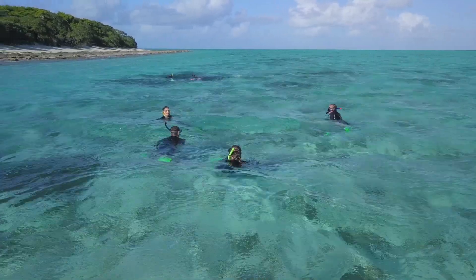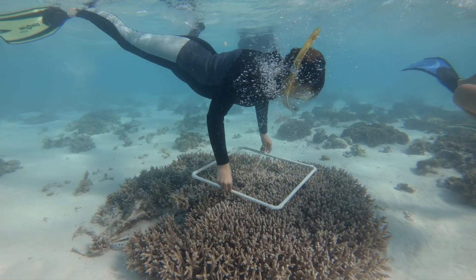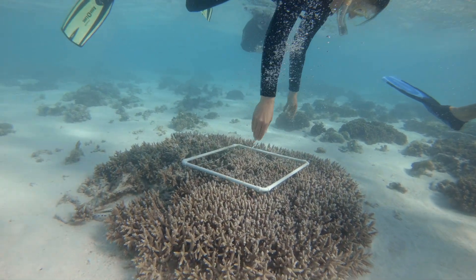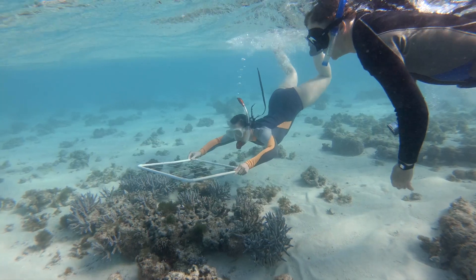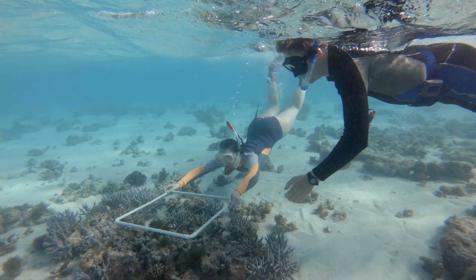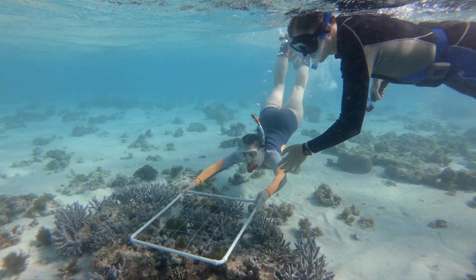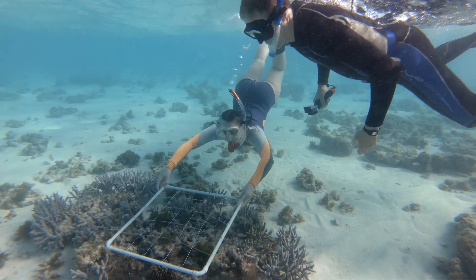So we went out and collected information in both locations. We laid down quadrat squares in both areas so we could figure out how much of each reef was covered in algae. That way we could check and see if there really was a difference in reef health between the two areas.